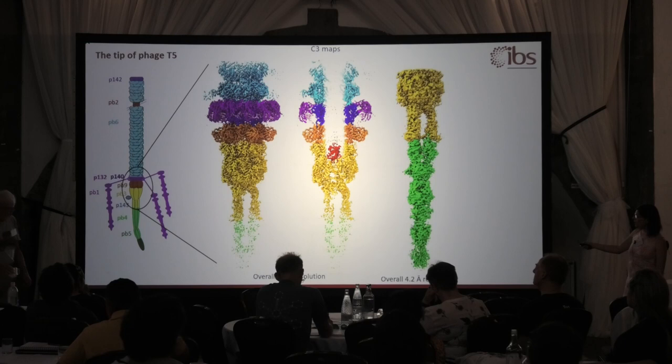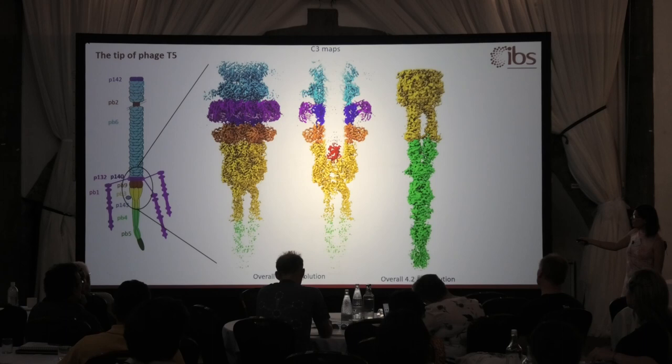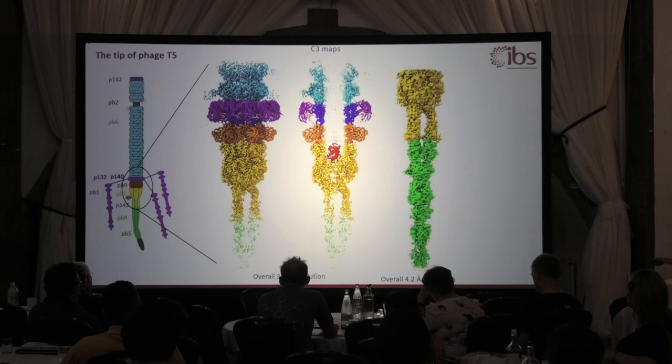P40 has exactly the same fold as the major tail protein Pb6, except that it's surrounded by a dodecamer of P132, which is the collar that allows the L-state fibers to attach to the tail. The major tail protein has some decoration domains, and P40 lacks those decoration domains to allow the dodecamer of P132 to assemble around it.